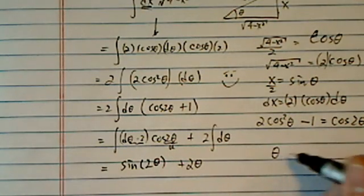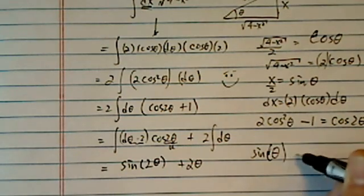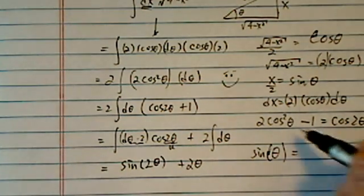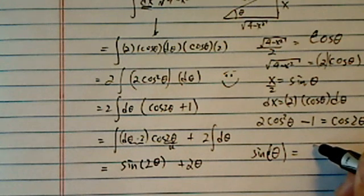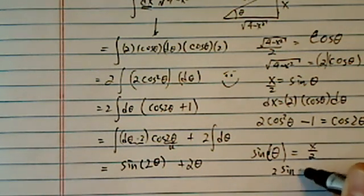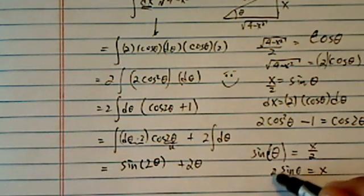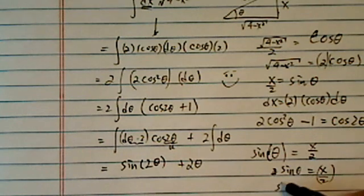Now what's my theta? Remember sine theta is equal to, oh boy, this is awful looking. Sine theta from here triangle-wise we have x over 2. Okay, so 2 sine theta is equal to x. That's not a pretty thing to do.